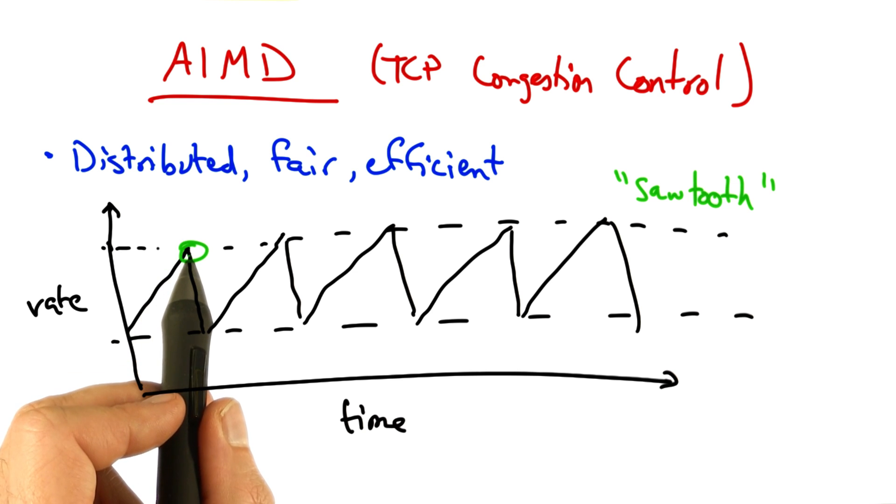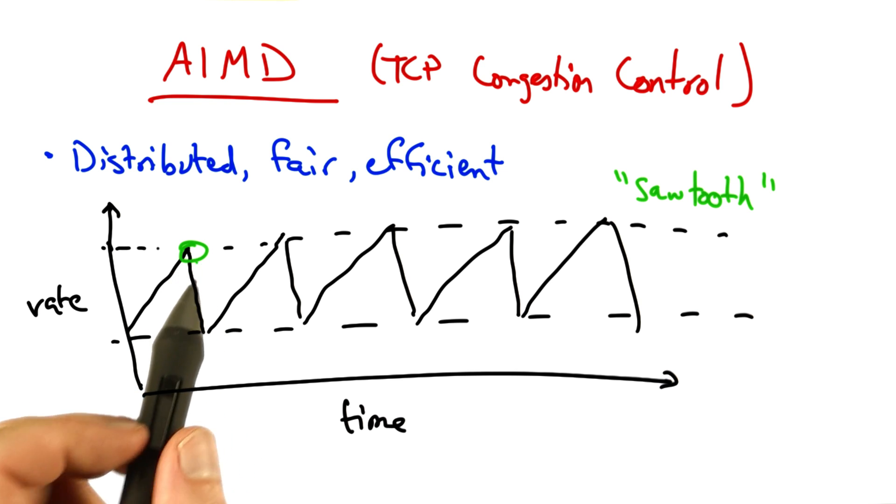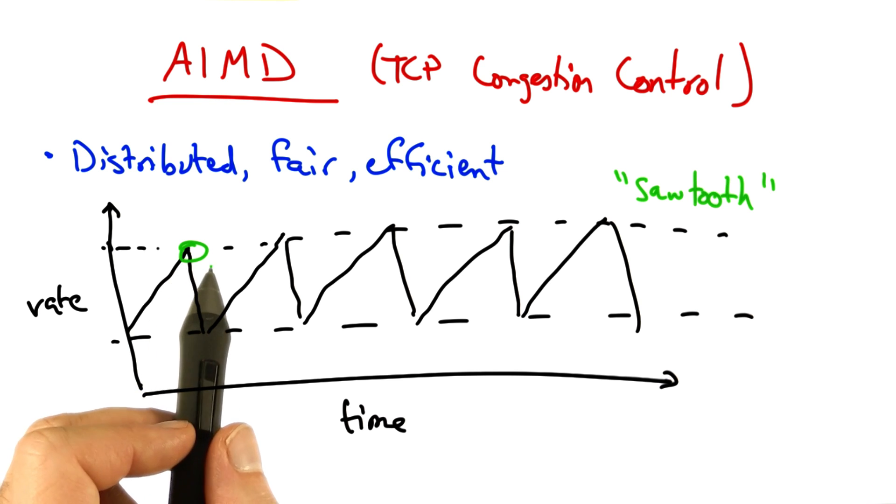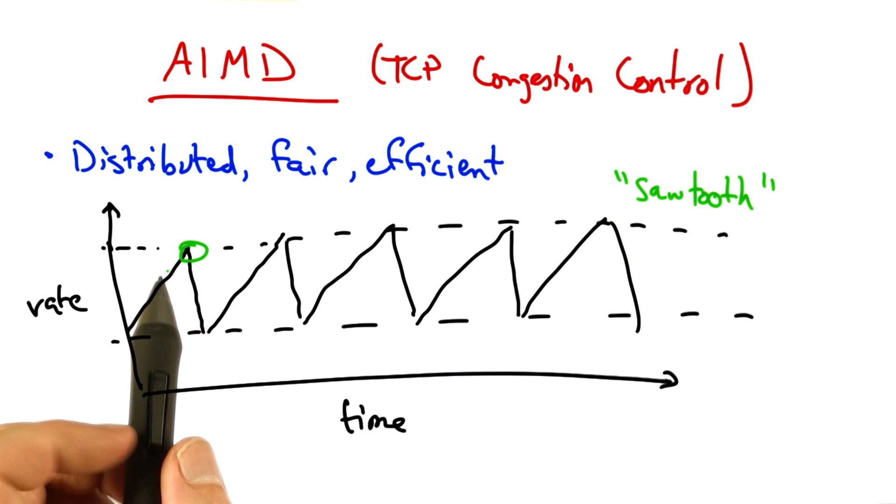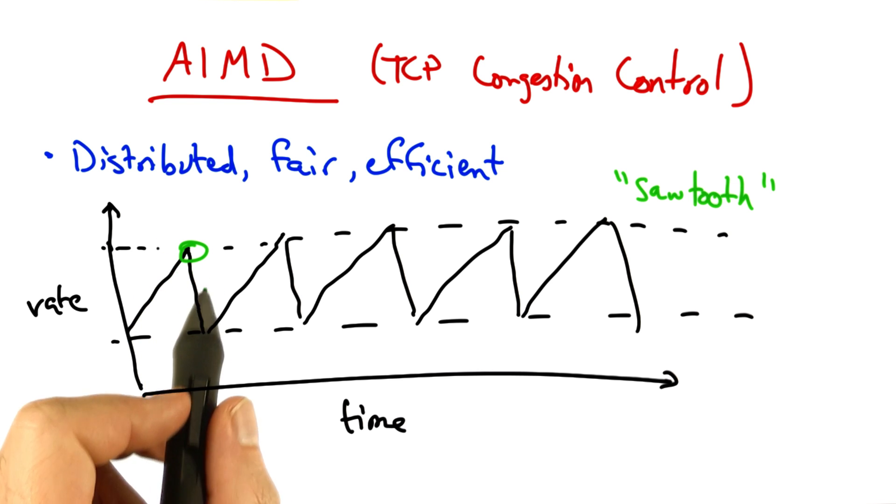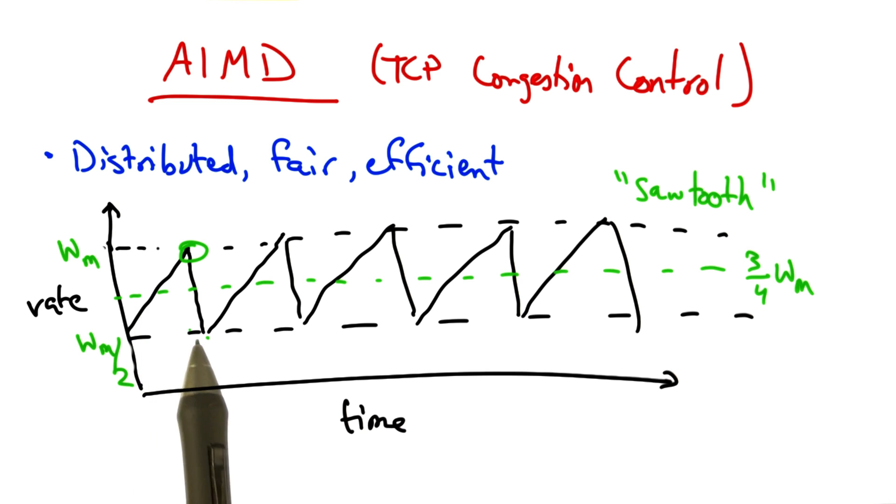When the sender reaches a saturation point by filling up a buffer in a router somewhere along the path, it will see a packet loss, at which point it will decrease its sending rate by half. You can thus see that a TCP sender sends at a sending rate shown by the dotted green line, halfway between the maximum window size at which the sender sends and half that rate, which it backs off to when it sees a loss.